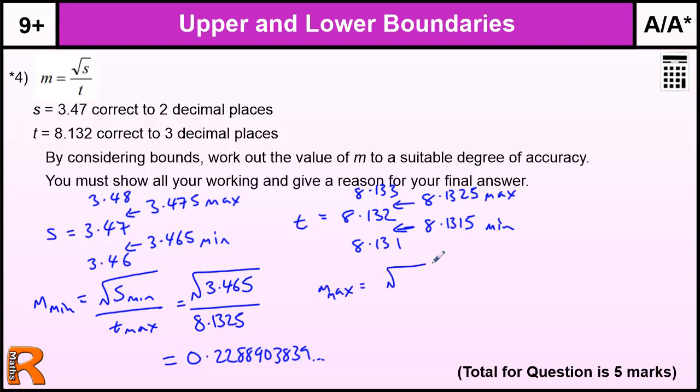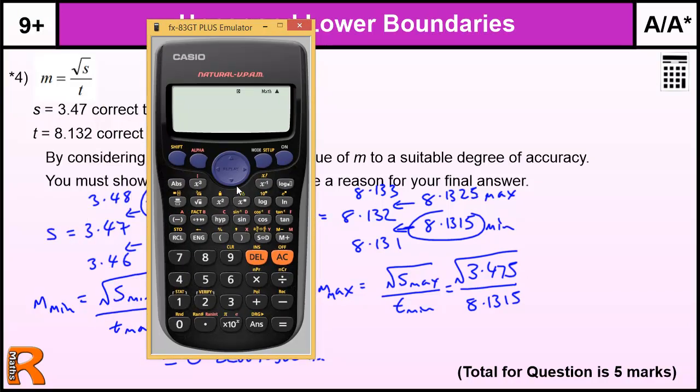That gives us the smallest value of M. So s min is 3.465 because we've taken it from s minimum. And then we're going to divide by t maximum, which is 8.1325. And that gives us the square root of 3.465 all over 8.1325, which is 0.2288903838. That will go on forever. So that's the minimum value. Let's have a look at the maximum value. The maximum value for M is when we have s max divided by t min. That's going to be s max, 3.475, and t min is this value of 8.1315. So we've got 0.2292486243.